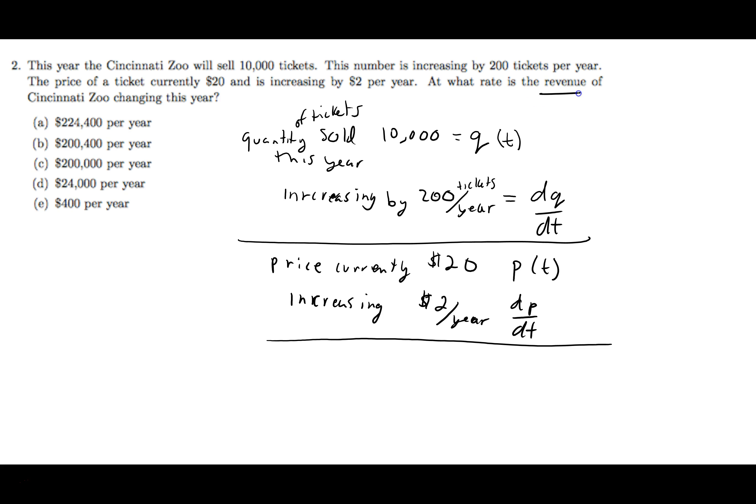Then next they talk about revenue. Let's build the revenue function. Revenue is how much money you have coming in from ticket sales. And how much money you have coming in is the price of the ticket times how many tickets, the quantity. So revenue as a function of time is equal to P as a function of time times Q as a function of time.